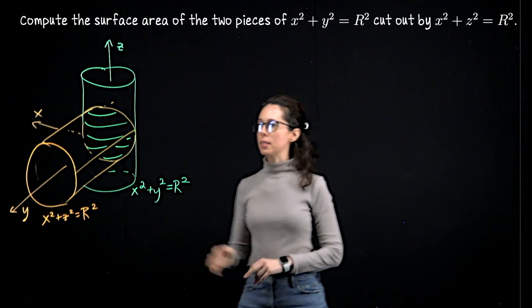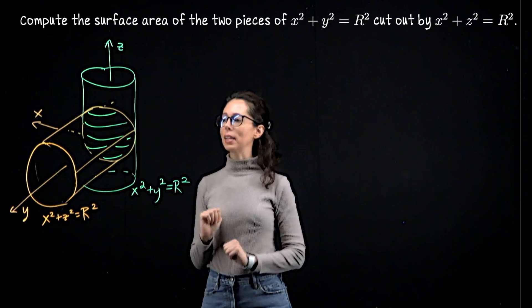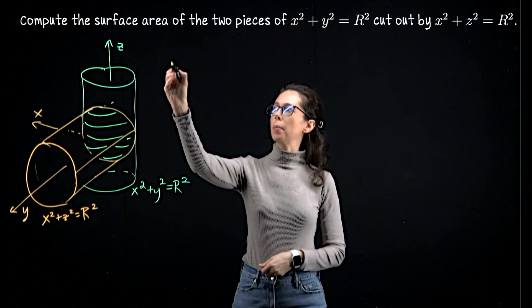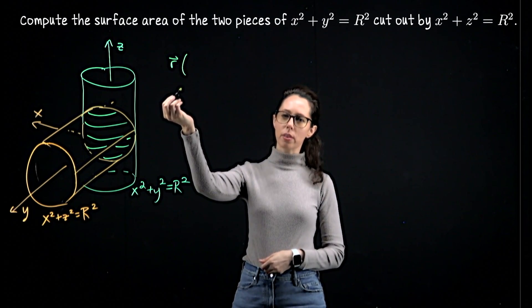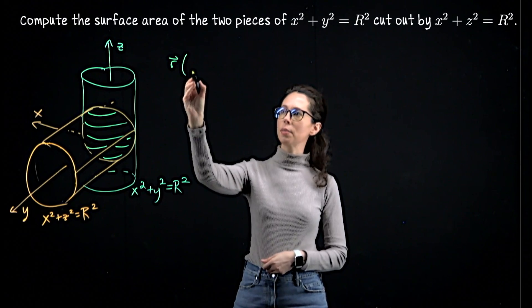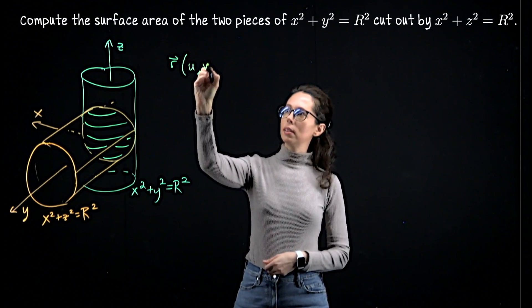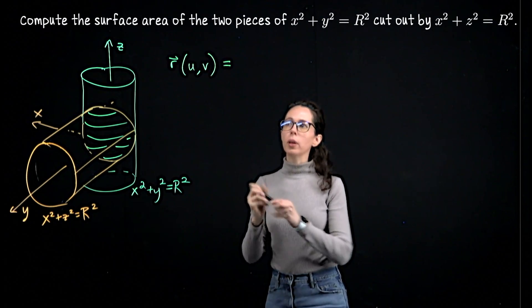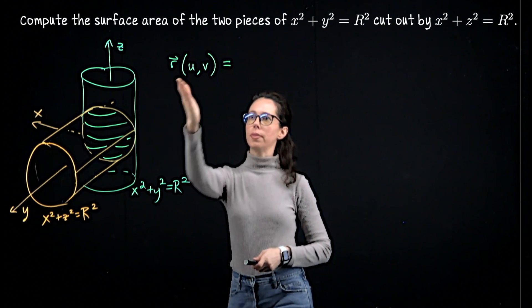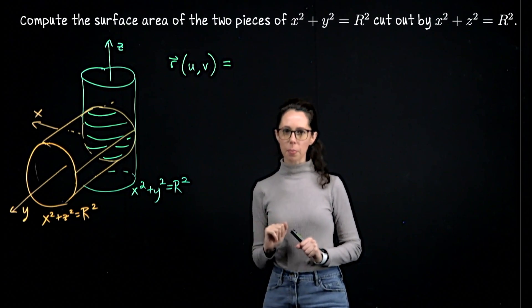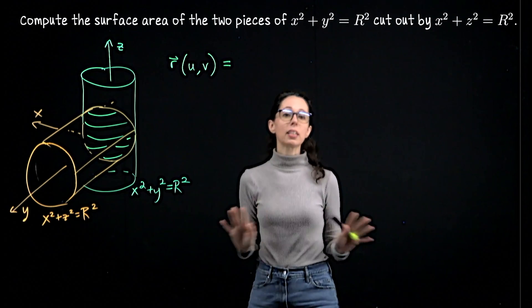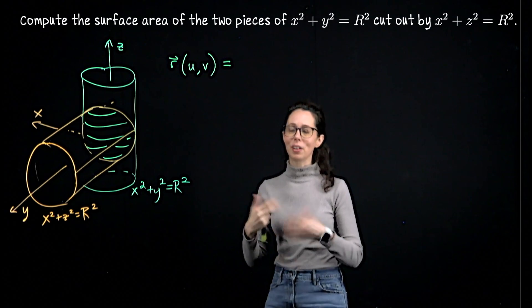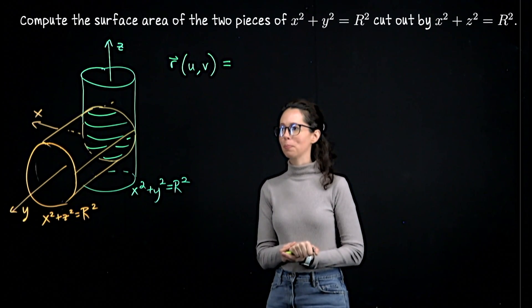Let's parametrize this surface space that I've highlighted here. We need a parametrization of the form R of u and v to stick with traditional notation. So I will parametrize this surface with these two parameters, but if you want to call them something a little bit more specific, like theta and z, ultimately, that's fine too. That's just a choice of letter for your parametrization.